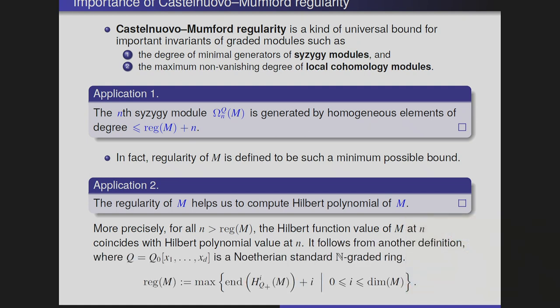Here is the definition in terms of local cohomology modules. We can take any standard graded Noetherian ring, and the regularity of a finitely generated graded module is defined as the maximum of end of the i-th local cohomology module of M with respect to the irrelevant ideal, plus i. The end of the i-th local cohomology module is just the maximum non-vanishing degree of that graded module. To take advantage of these two applications, one has often tried to find upper bounds of Castelnuovo-Mumford regularity in terms of simpler invariants which are comparatively easy to understand.